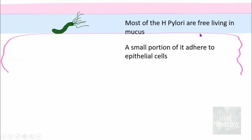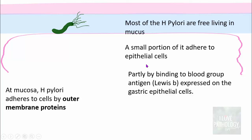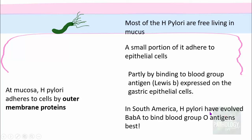A very small portion of H. pylori adheres onto the underlying gastric epithelial cell. This adhesion is mediated by the outer membrane proteins of H. pylori. They bind to blood group antigens — particularly the Lewis B blood group antigen expressed on gastric epithelial cells. In some parts of the world, H. pylori have also evolved proteins to bind the blood group O antigen. This organism has unique bacteriological features.